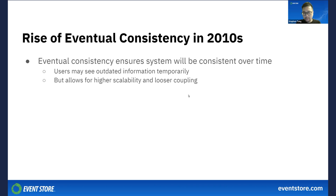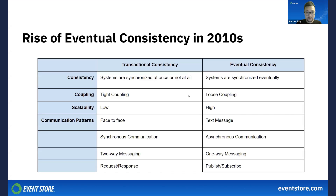We can compare transactional and eventual consistency with a few criteria. When it comes to transactional consistency, all systems are either synchronized at once or not at all. Eventual consistency, on the other hand, promises that systems will be synchronized eventually.